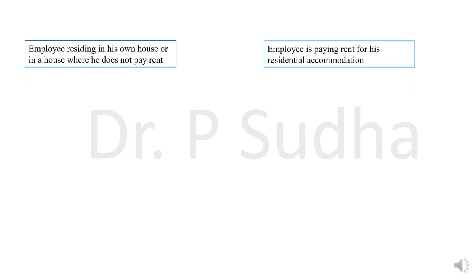For calculating the HRA allowance, we are classifying employees into two different types. One is an employee residing in his own house — if the employee is residing in his own house, he will not pay HRA, so he will come under the first category. The second category is an employee paying rent — the employee is staying in a rented accommodation and he is paying rent.